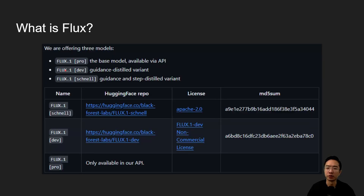So what is Flux? As we saw earlier, it generates images from text using prompts from the user. Flux offers three different types of models: the Pro, the Dev, and the Schnell.